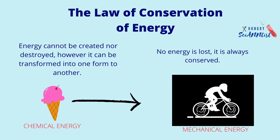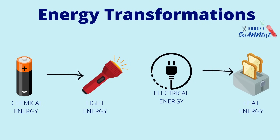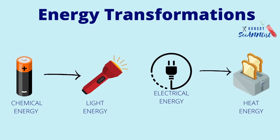Chemical energy from food is converted into mechanical energy. Chemical energy from batteries is converted to light energy. Electrical energy is converted to heat energy.